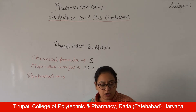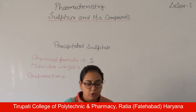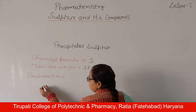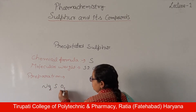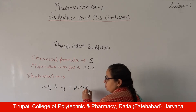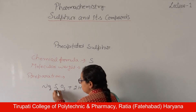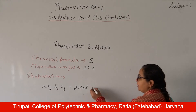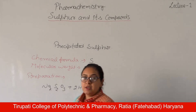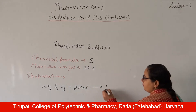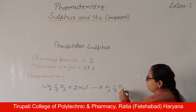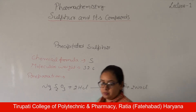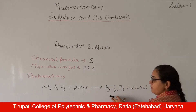For preparation, sodium thiosulfate (Na2S2O3) reacts with dilute hydrochloric acid (2HCl) to give H2S2O3 plus 2NaCl as precipitate.